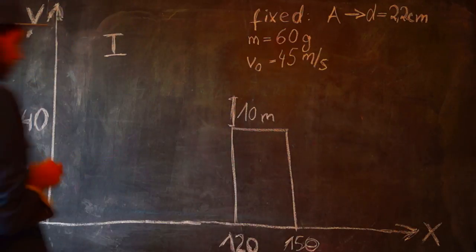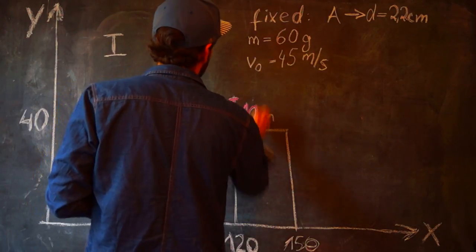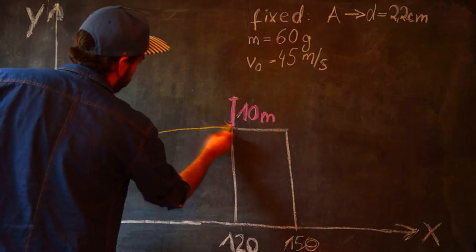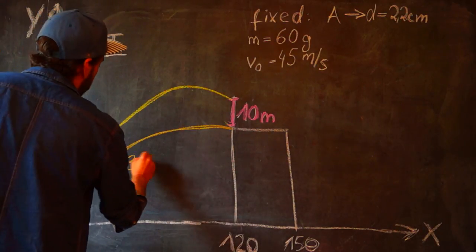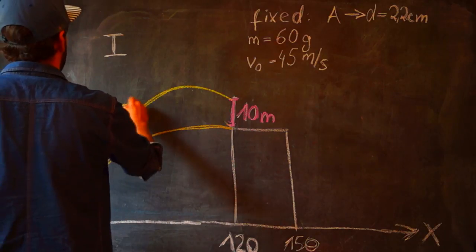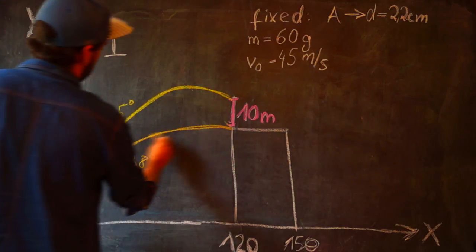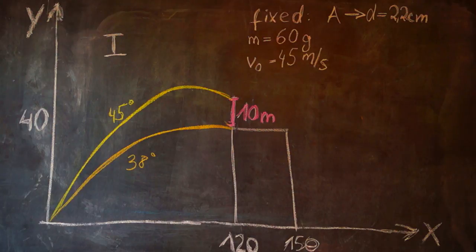The first group of peasants wants to damage the wall of the castle which is 10 meters high. By trial and error they find out exactly what we have calculated. They have to shoot at angles in between 38 degrees and 45 degrees in order to hit the wall of the castle.